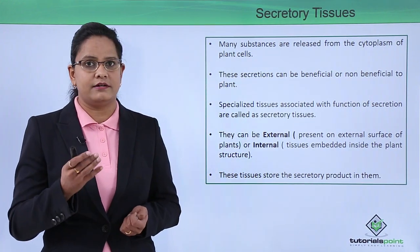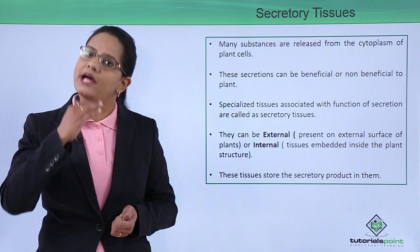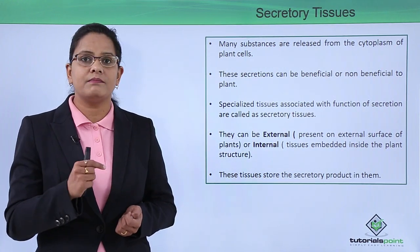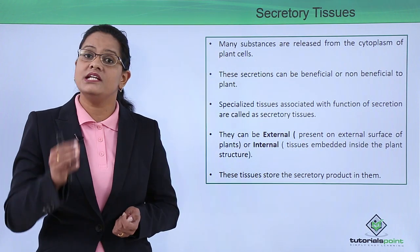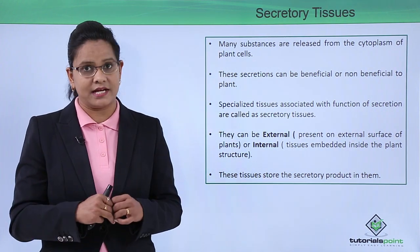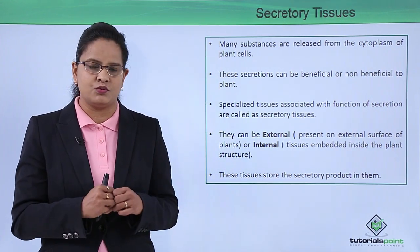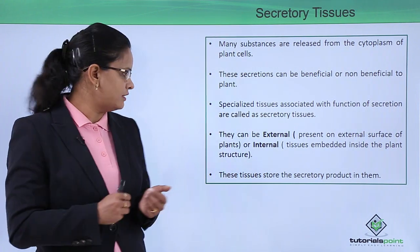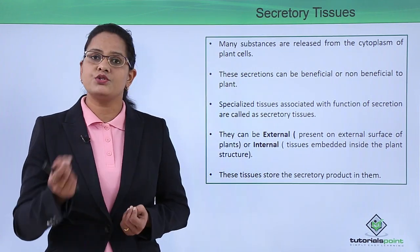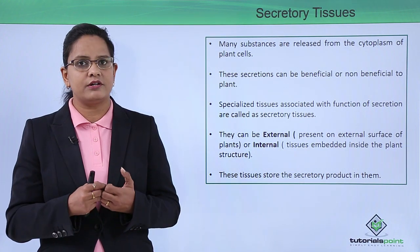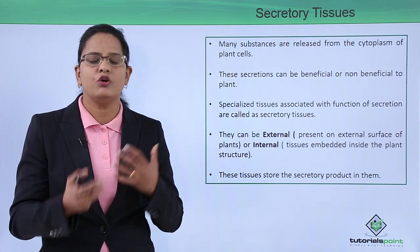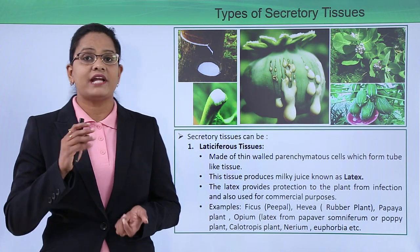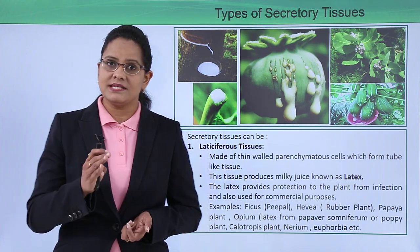These secretory tissues can be external — present on the external surface of the plant — or internal, meaning embedded inside the plant within other plant tissues. So they can be of two types: external as well as internal. These tissues store the secretory product in them and release it out as and when suitable.